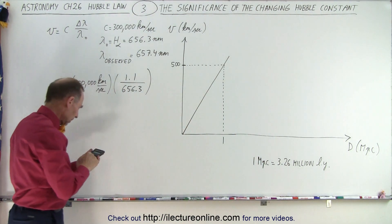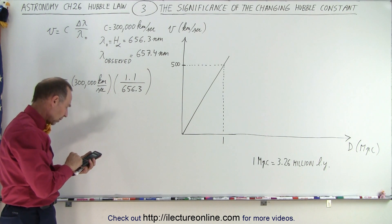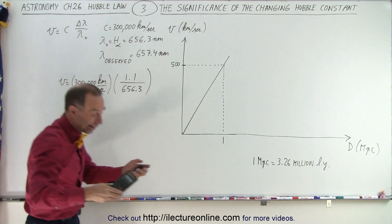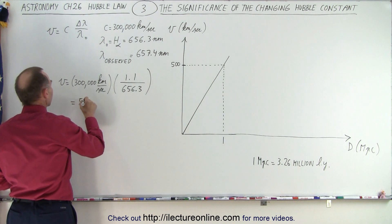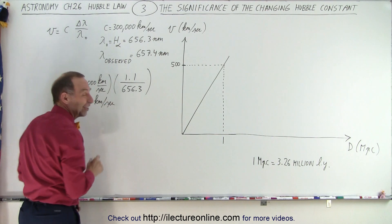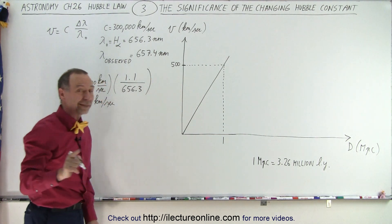So we say that the velocity is equal to C which is 300,000 kilometers per second. We multiply times the difference in the wavelength. Notice it went from 656.3 to 657.4 which is a change of 1.1 nanometers. And we divide that by the original wavelength. Notice that the units nanometers cancel out so we don't have to write those and let's calculate what that is equal to.